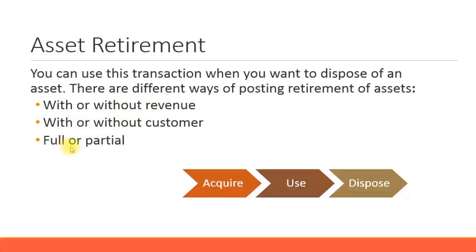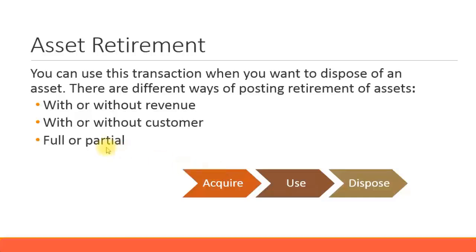There's also disposal of the asset - full or partial. Sometimes you might dispose of an asset fully, and sometimes you can do a partial retirement. For example, if you own a building with side-by-side sections and you're only selling part of it to a customer, that's a partial retirement. Similarly, you might have a large piece of land and want to sell 60% to a customer while retaining 40% for yourself - that also qualifies as a partial retirement of an asset.